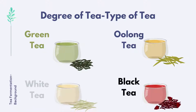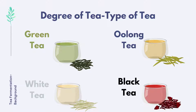Based on the degree of fermentation, there are various types of tea that can be found. For instance, green tea, white tea, oolong tea, and black tea. Different types of tea have different characteristics in terms of aroma, appearance, infusion colour, as well as taste.